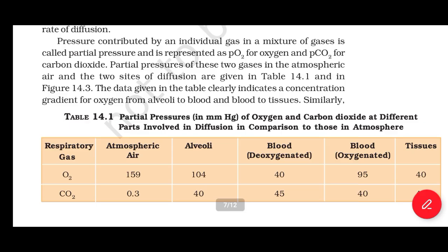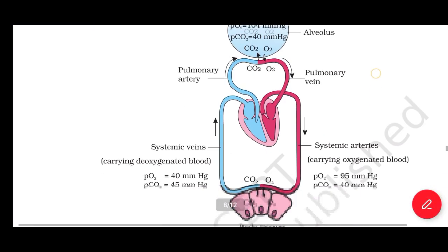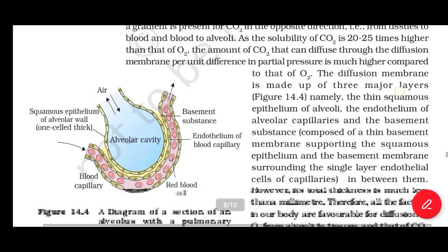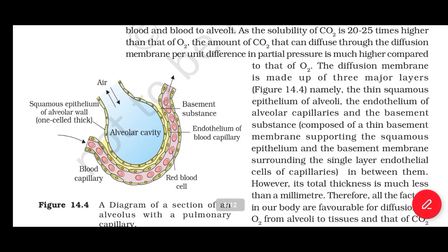There is a concentration gradient of oxygen from alveoli to blood and blood to tissue. Similarly, a gradient exists for CO2 in the opposite direction — from tissue to blood and blood to alveoli. As the solubility of CO2 is 20 to 25 times higher than that of O2, the amount of CO2 that can diffuse through the diffusion membrane per unit difference in partial pressure is much higher compared to O2. The diffusion membrane is made up of three major layers: the thin squamous epithelium of alveoli, the endothelium of alveolar capillaries, and the basement membrane between them.